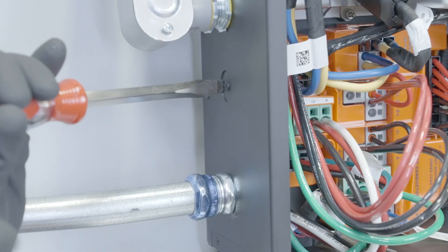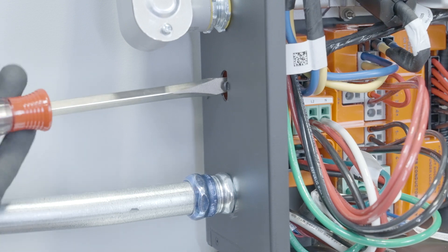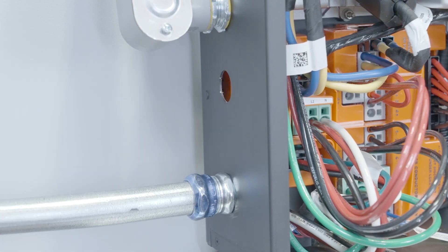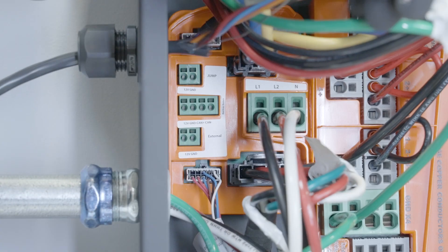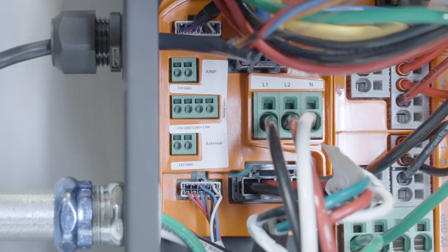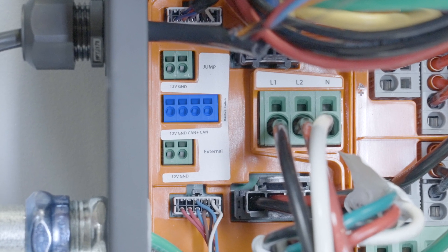With the AC and DC terminations completed, next up is communication wiring between Powerwall Plus and the gateway or backup switch. The communication port is located on the left side of the solar assembly.